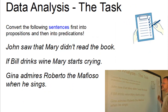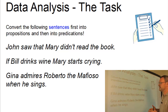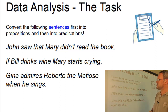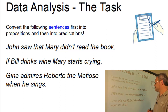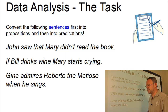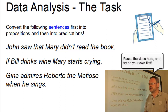This is our task: as usual we have to convert the following sentences first into propositions and then into predications. Number 1: John saw that Mary didn't read the book. Number 2: If Bill drinks wine, Mary starts crying. And number 3: Gina admires Roberto the mafioso when he sings.